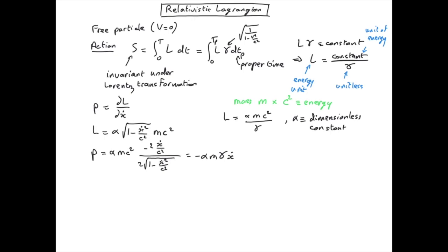If we take now the non-relativistic limit, that means we take v much smaller with respect to the speed of light. We know that in this case we get gamma approximately equal to 1. So this gives the momentum p equal mẋ if I choose alpha to be equal to minus 1.